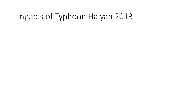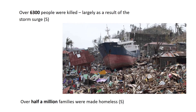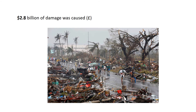Tacloban was the worst-hit city. Because of its location, the water from the storm surge was funneled up between the surrounding land and smashed into Tacloban, completely destroying it. Over a million people were affected and over 6,300 people were killed — largely due to the storm surge, though the winds also killed many through debris. The storm surge was powerful enough to drag large boats well inland.